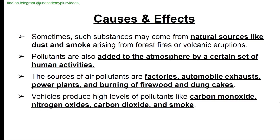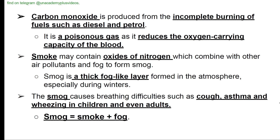Sometimes pollutants come from natural sources like dust and smoke from forest fires or volcanic eruptions. Human activity sources of air pollutants include factories, automobile exhaust, power plants, and burning of firewood and dung cakes. Vehicles produce high levels of carbon monoxide, nitrogen oxides, CO₂, and smoke. Carbon monoxide is produced from incomplete burning of fuels such as diesel and petrol. It is a poisonous gas as it reduces the oxygen-carrying capacity of the blood.